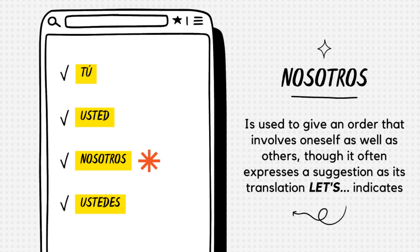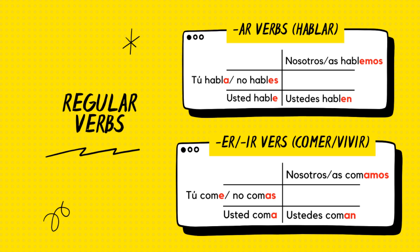Let's take a quick look at the regular verbs in command form. Here we have the AR verbs — for example, the verb hablar. We're going to use the four forms: tú, usted, nosotros, and ustedes. For the AR verbs, we have: tú habla, no hables, usted hable, nosotros or nosotras hablemos, and ustedes hablen.